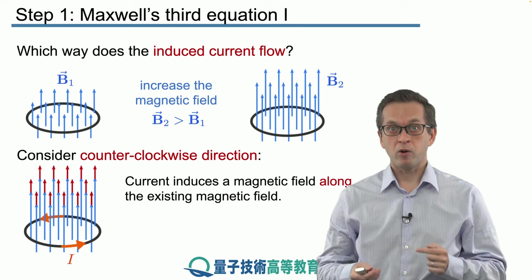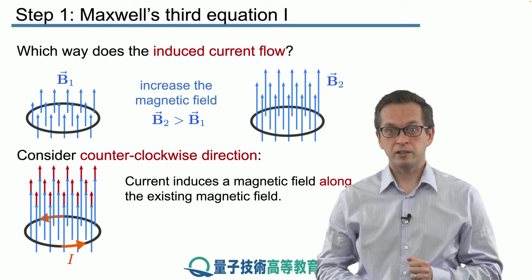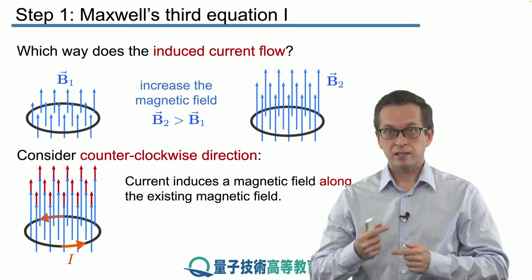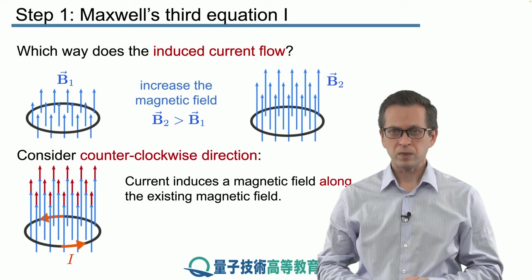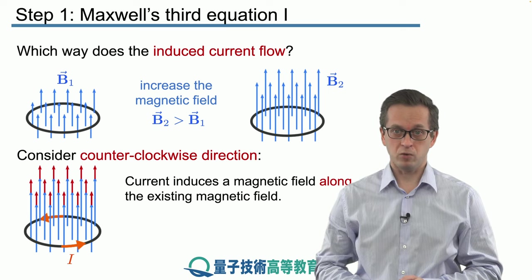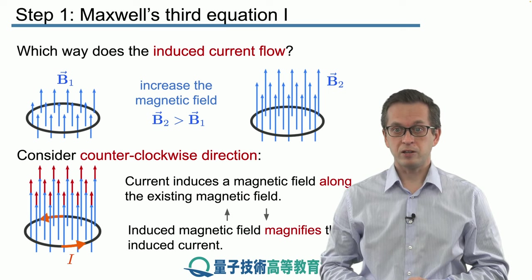But by doing that, we are also increasing the strength of the current in the loop. This creates a positive feedback loop which is just increasing the current, increasing the magnetic field. So basically, we are getting energy out of nowhere. We know that this cannot be the case.